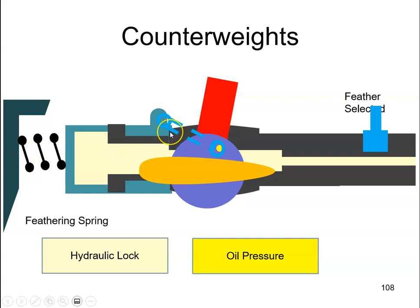When it hits this stop, the propeller can't go any further. We are at the feather position. That's how it's achieved with a single-acting propeller. There will be a feathering spring.